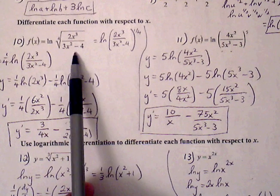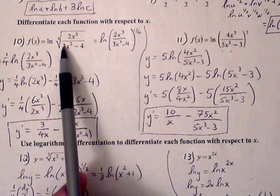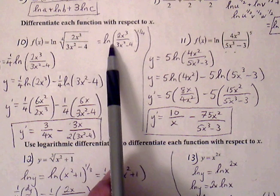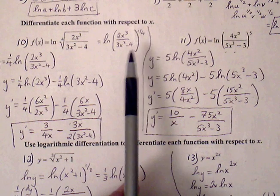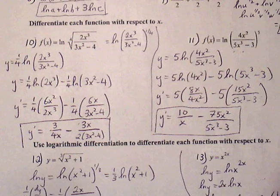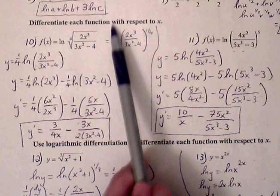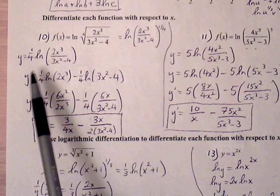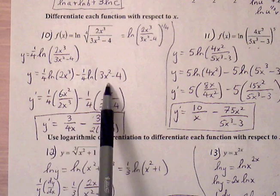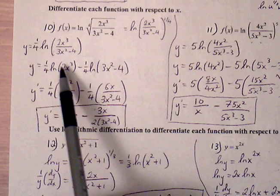Number ten: differentiate each expression with respect to x. We have ln of the fourth root of 2x³ over (3x² minus 4). When you see a natural log problem, take advantage of it and expand as much as you can to make finding the derivative easier. Rewrite with a one-fourth exponent, bring down the one-fourth, then use the quotient property — ln(a/b) equals ln(a) minus ln(b) — and distribute the one-fourth through.